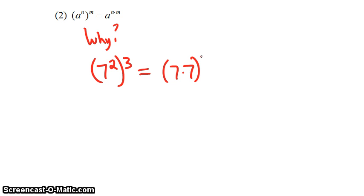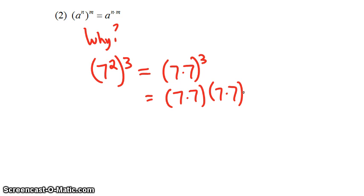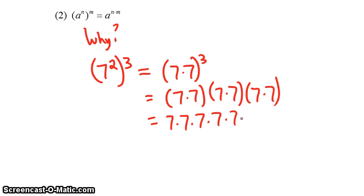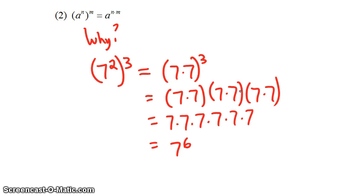7 squared means 7 times 7. And if we cube that, we'll be multiplying 7 times 7 by itself three times. This gives us a total of six sevens when we remove the parentheses, so we have 7 to the sixth power. Why did we end up multiplying 2 times 3? We have three groups of two sevens, and 3 times 2 gives you 6.